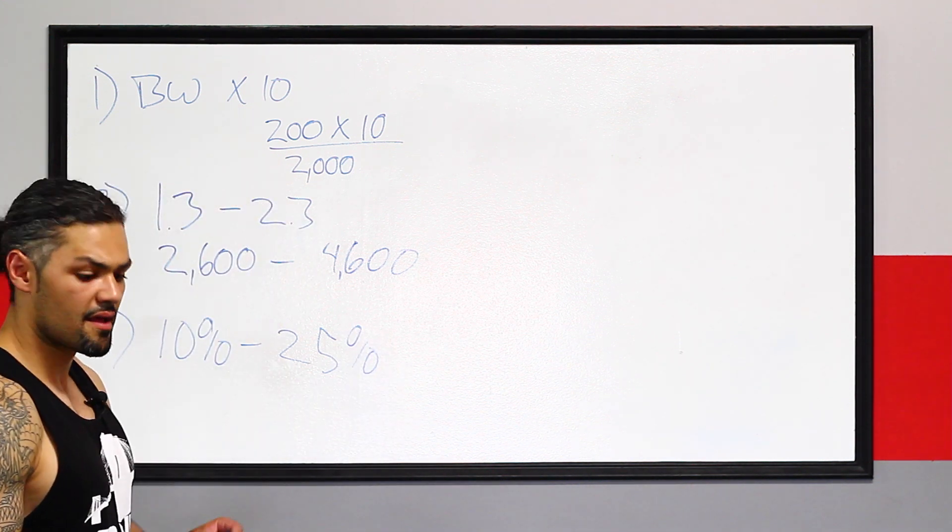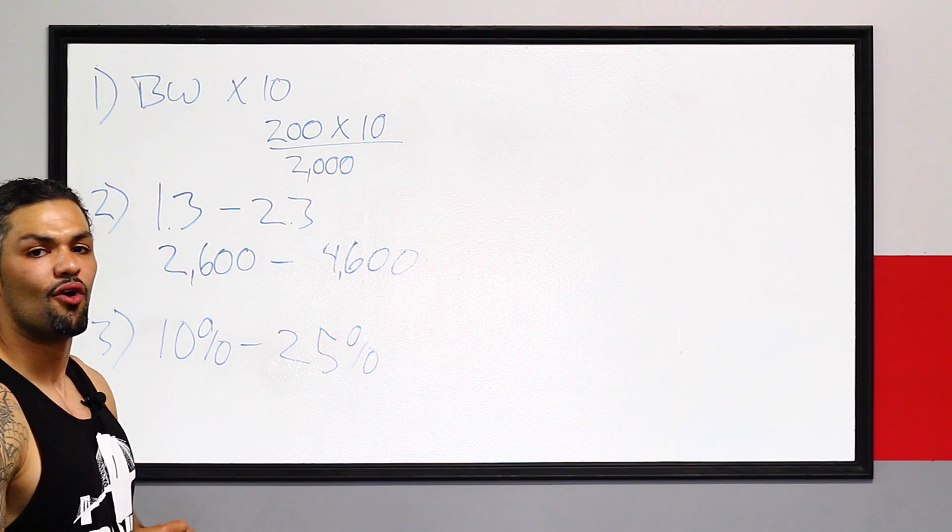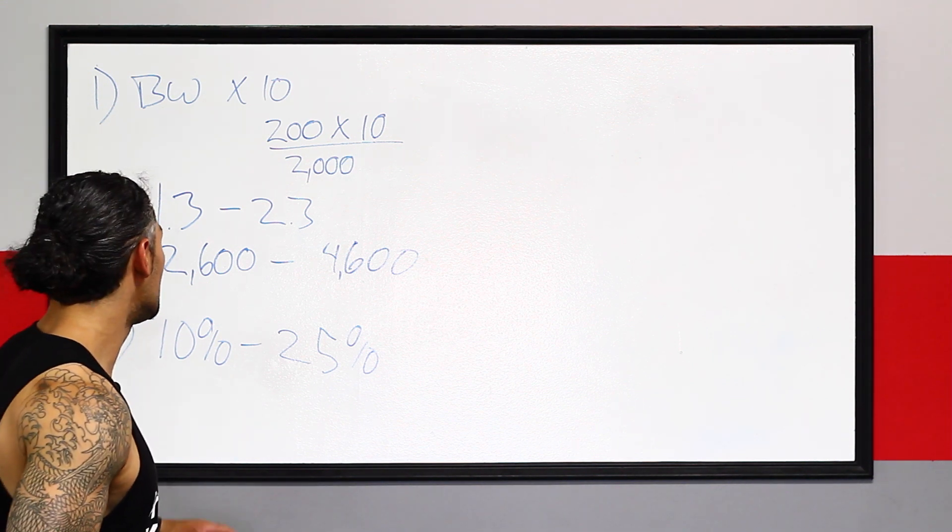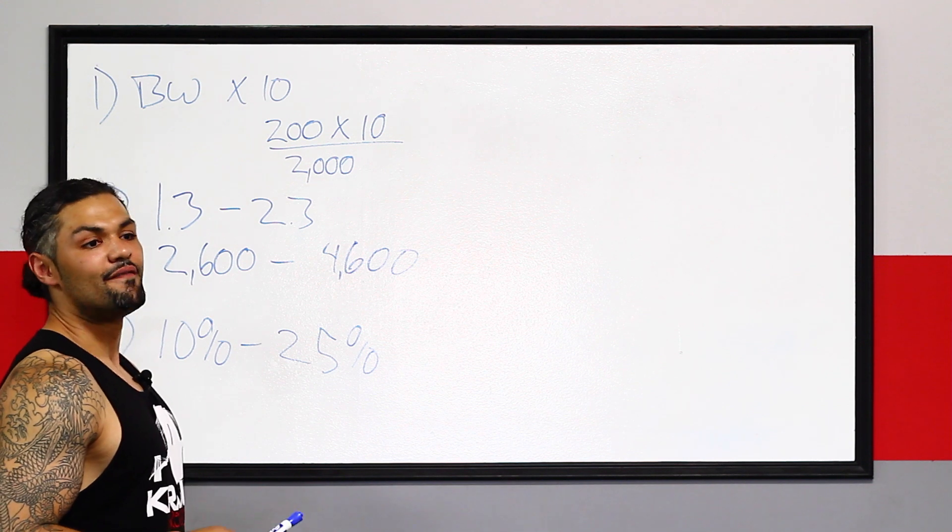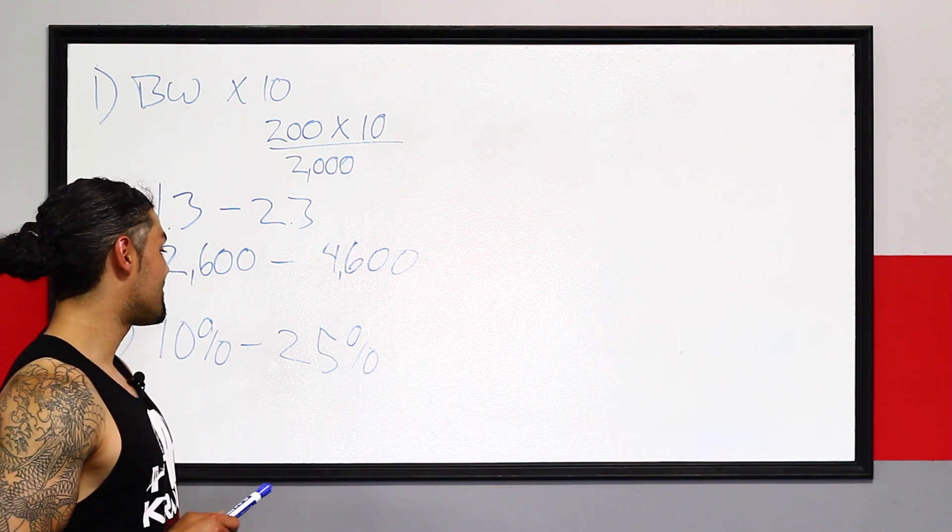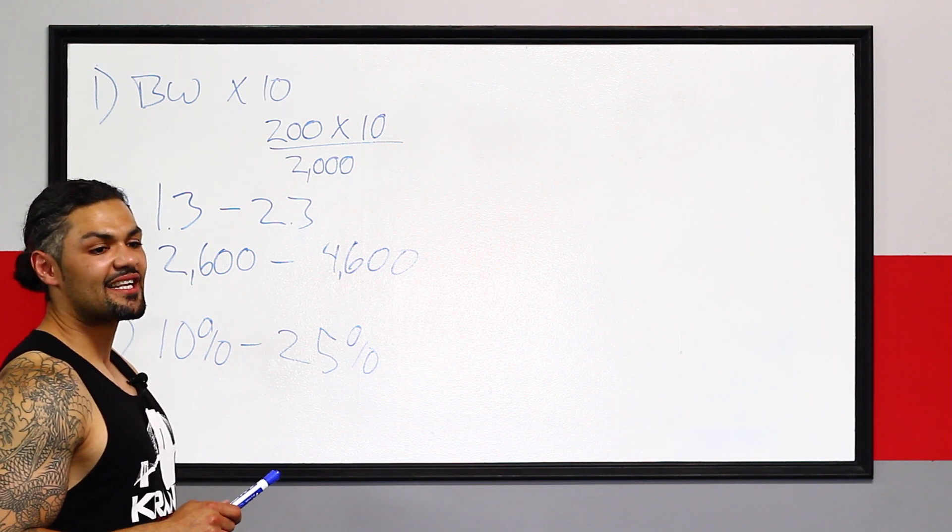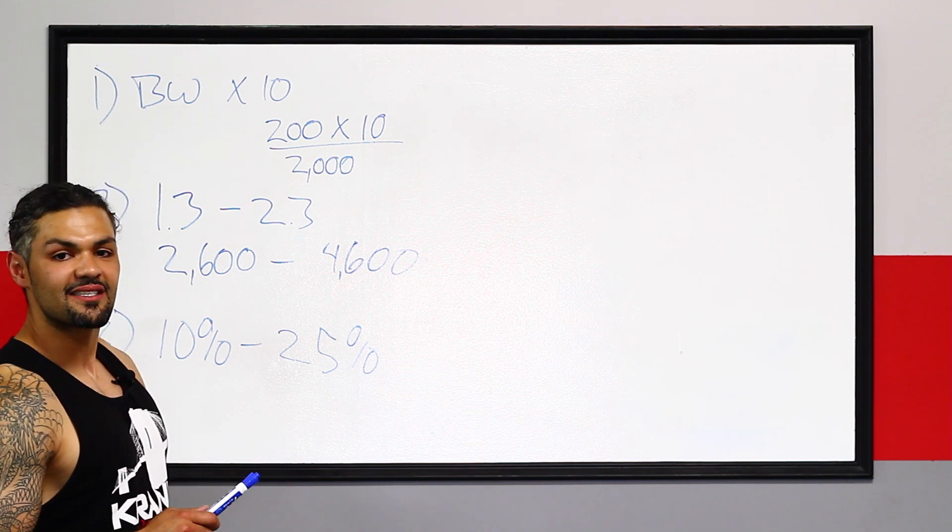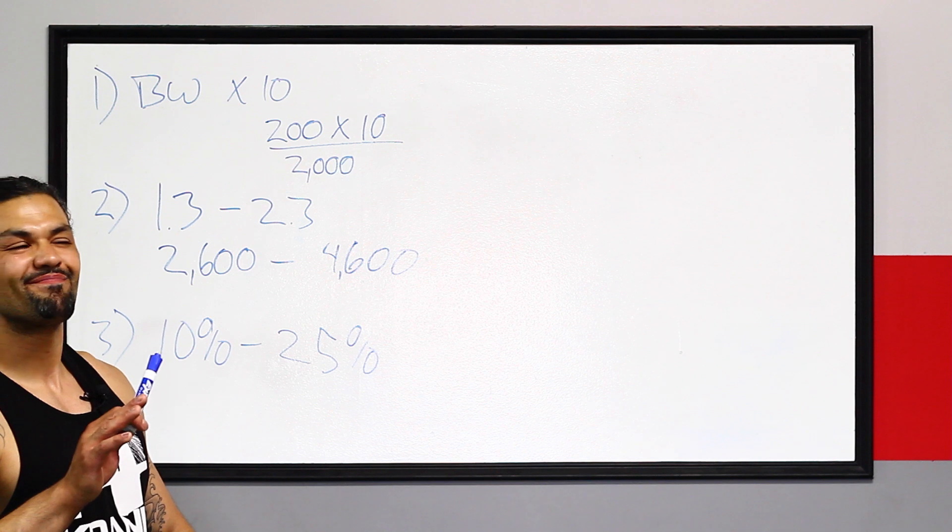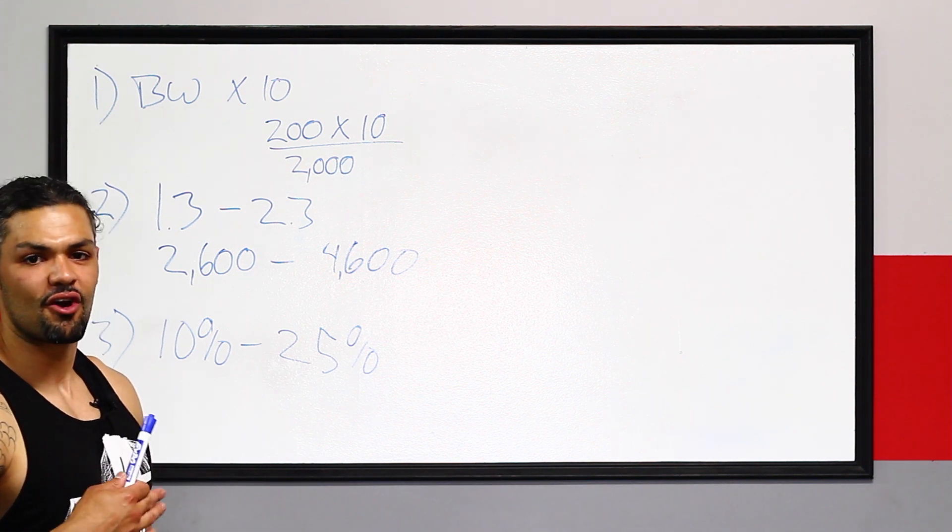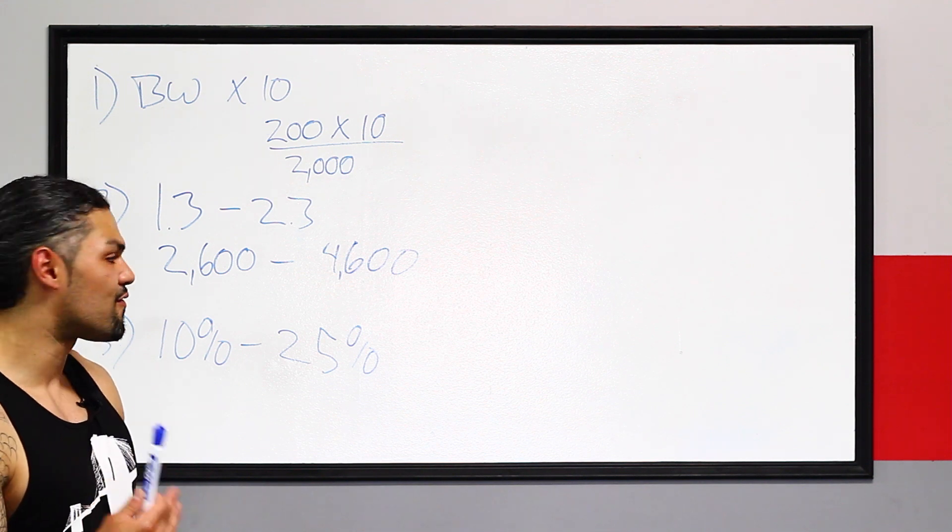So 10%, very conservative cut or gain. Cut or bulk for you meatheads out there. 25%. Very, very reckless or aggressive cut or bulk. I like to use something that's a little long lasting, a little slow, and I don't like to, I don't want it to feel hard. I want it to be something I can sustain for a long time.